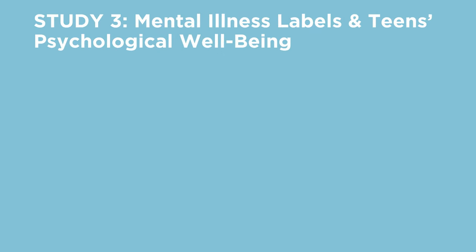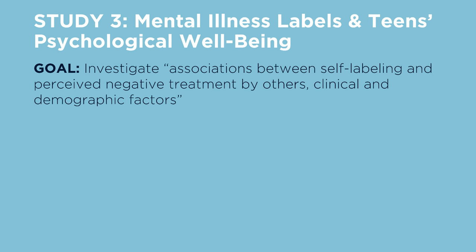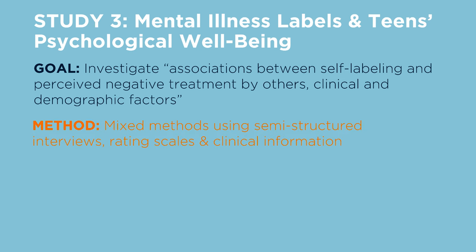Our last example is about self-labeling among adolescents with mental disorders, or the impact of mental illness labels on teens' psychological well-being. The goal of this study was to investigate associations between self-labeling and perceived negative treatment by others, clinical and demographic factors. The researchers had the hypothesis that many teens wouldn't self-label, and those that did would have worse psychological well-being. The researchers combined methods to test this hypothesis. They did semi-structured interviews with some open-ended questions where teens could express their thoughts and emotions. They also used rating scales to quantify teens' experiences, like the Rosenberg self-esteem scale, and clinical information about each patient, like their type of disorder and age of first treatment for mental health issues.